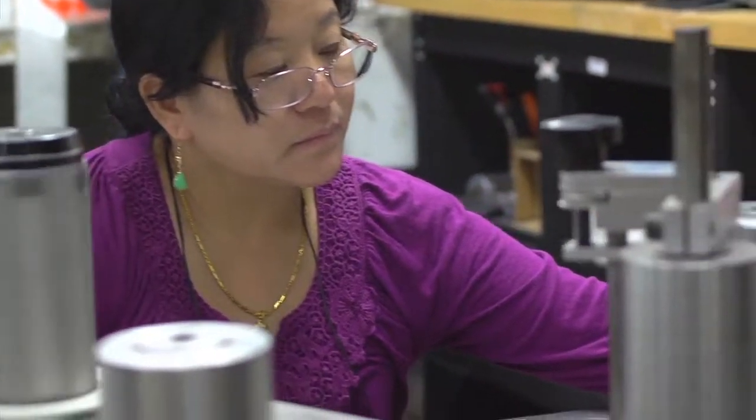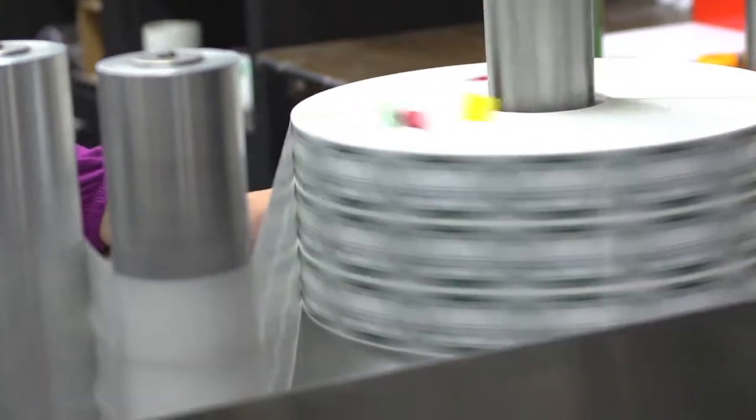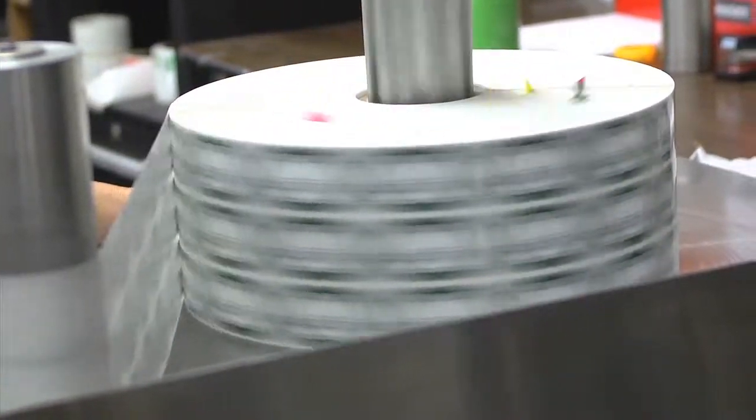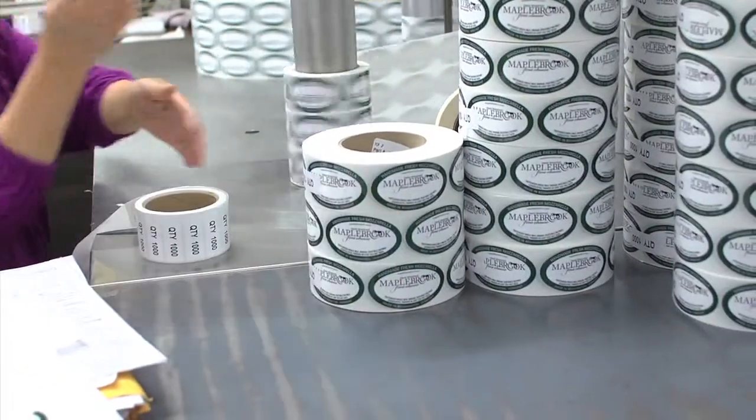Once your labels have finished printing, they are taken to be cut down and rewound onto cores and into rolls. The rolls are rewound to the direction indicated for your co-packer or label machine specifications.